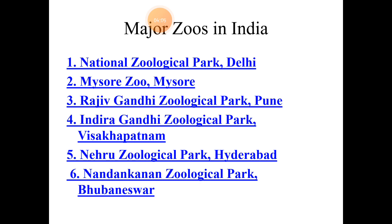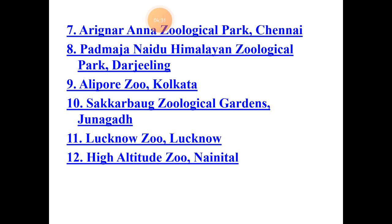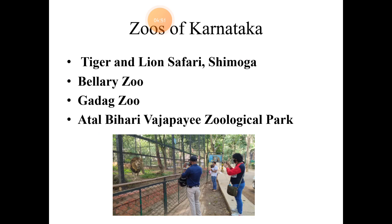Some major zoos of India include: National Zoological Park of Delhi, Mysore Zoo of Karnataka, Rajiv Gandhi Zoological Park of Pune, Indira Gandhi Zoological Park of Vizag, Nehru Zoological Park of Hyderabad, Nandankanan Zoological Park of Bhubaneswar, Arignar Anna Zoological Park of Chennai, Padmaja Naidu Himalayan Zoological Park of Darjeeling, Alipur Zoo of Kolkata, Sakharbagh Zoological Gardens of Junagadh, Lucknow Zoo, and High Altitude Zoo of Nainital. Few zoos of Karnataka include Tiger and Lion Safari of Shimoga, Bellary Zoo, Gadag Zoo, and Atal Bihari Vajpayee Zoological Park.